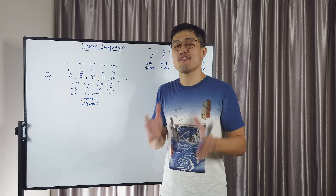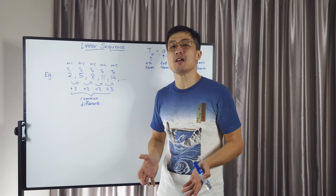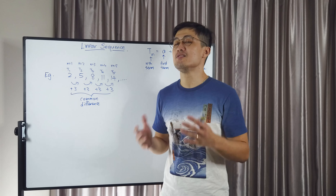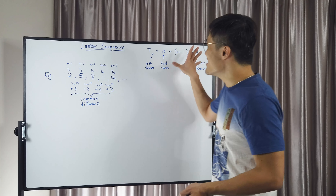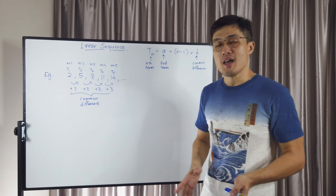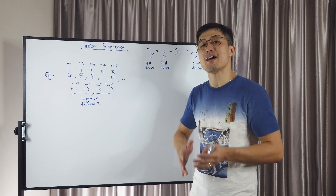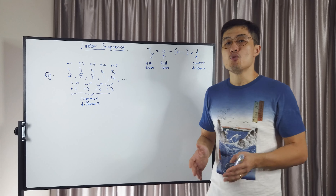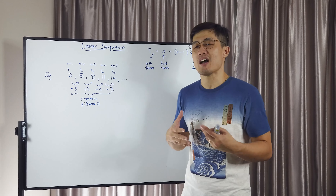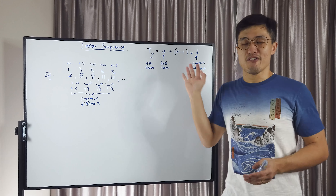Some people have heard of the term arithmetic progression — it refers to the same thing. Some people refer to it as a sequence with a common difference. This is a general form which we will be exploring later on, and we will be seeing how it comes about, how to apply it, as well as an alternative form which I feel is quite easy to use in case you forget this formula.